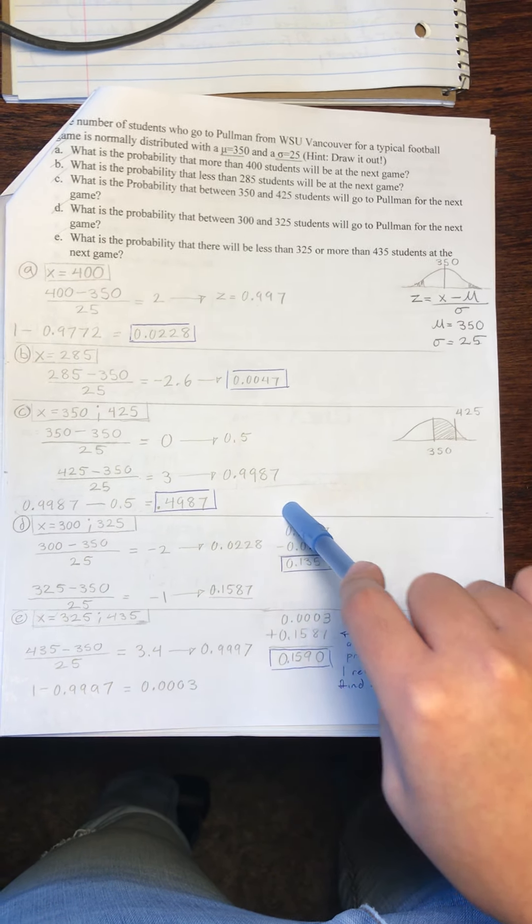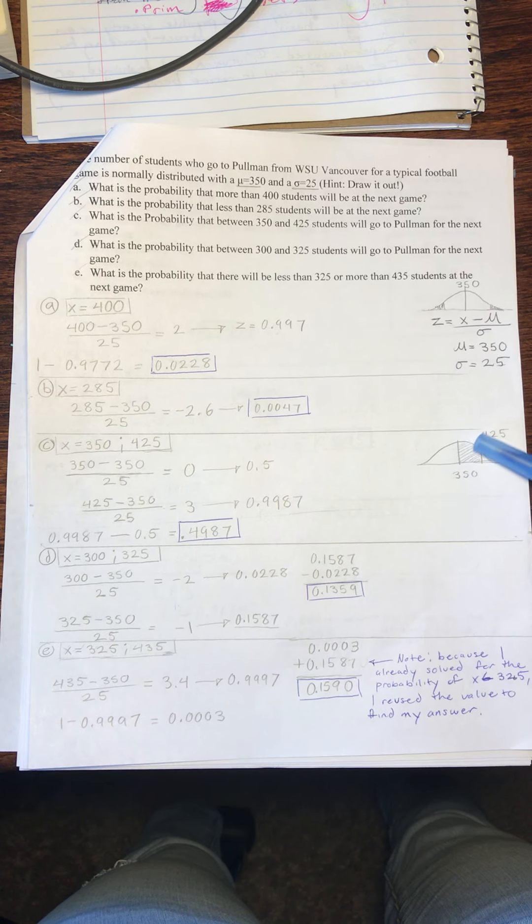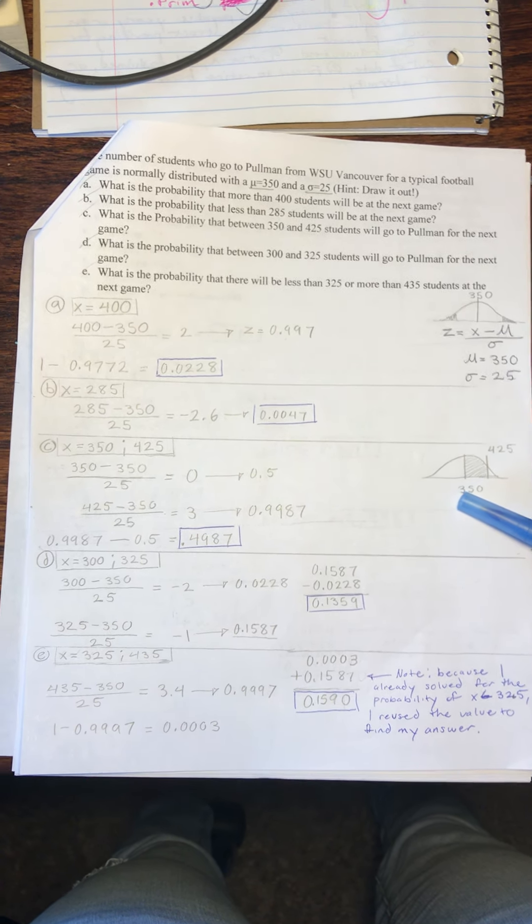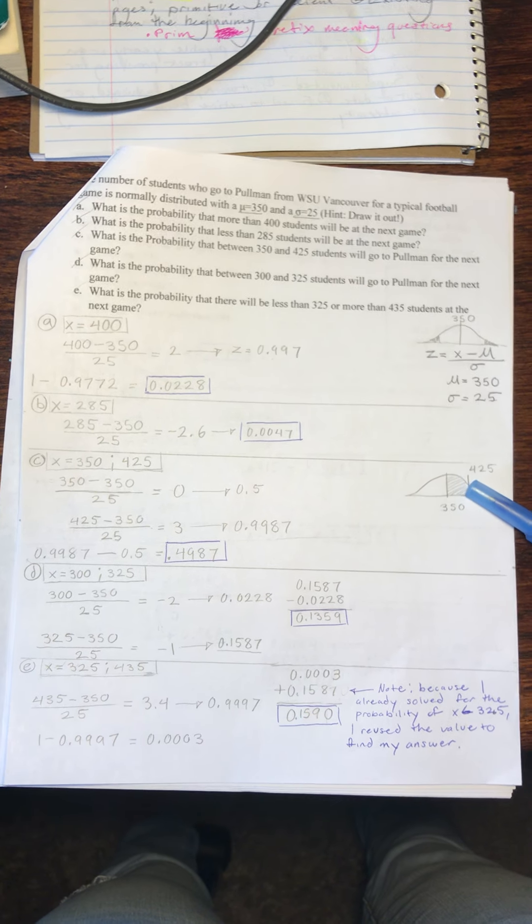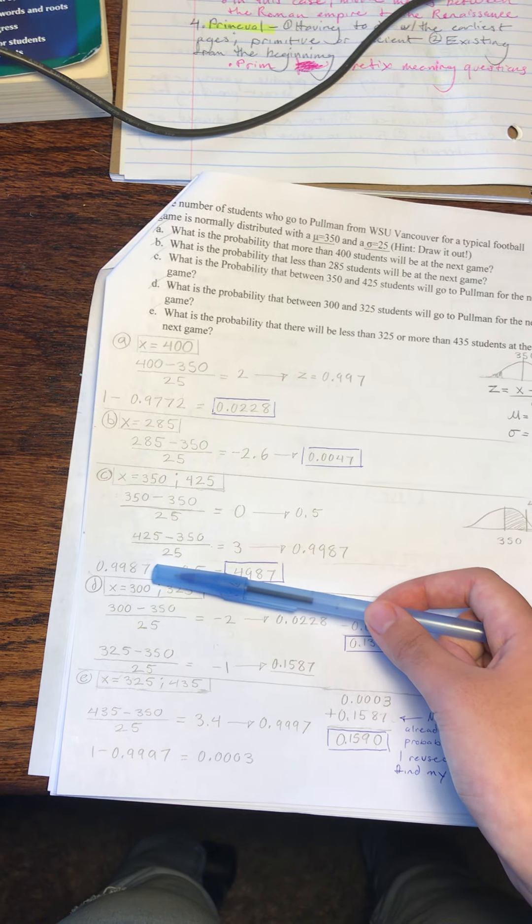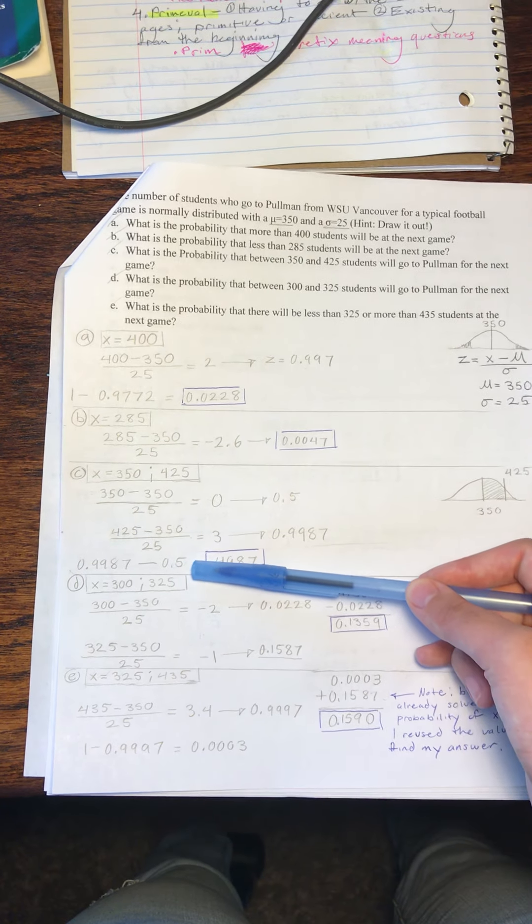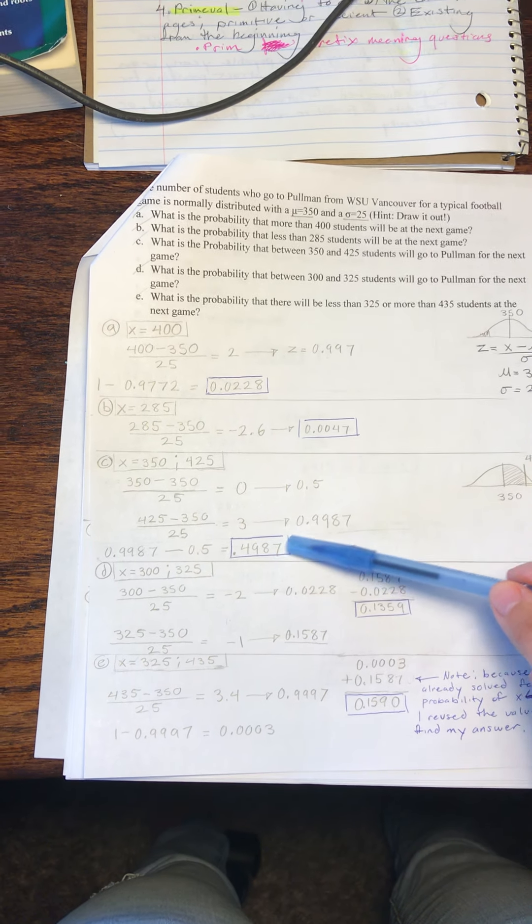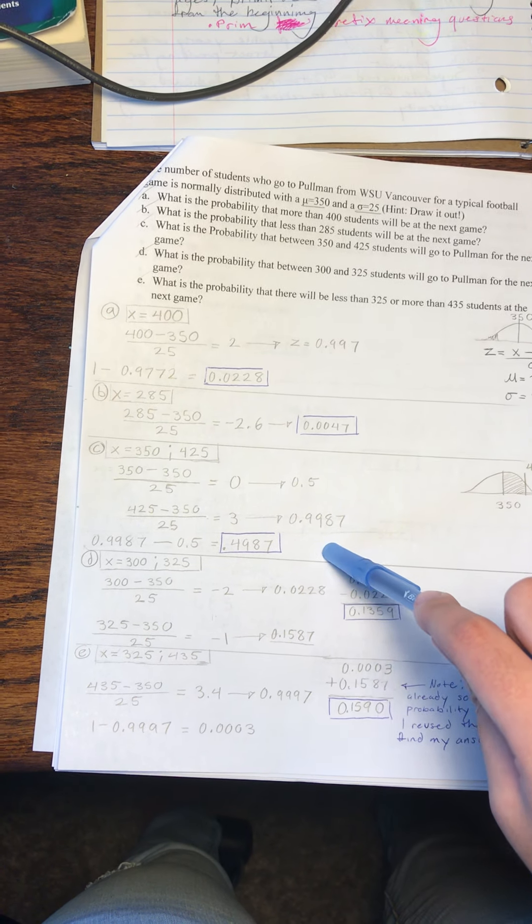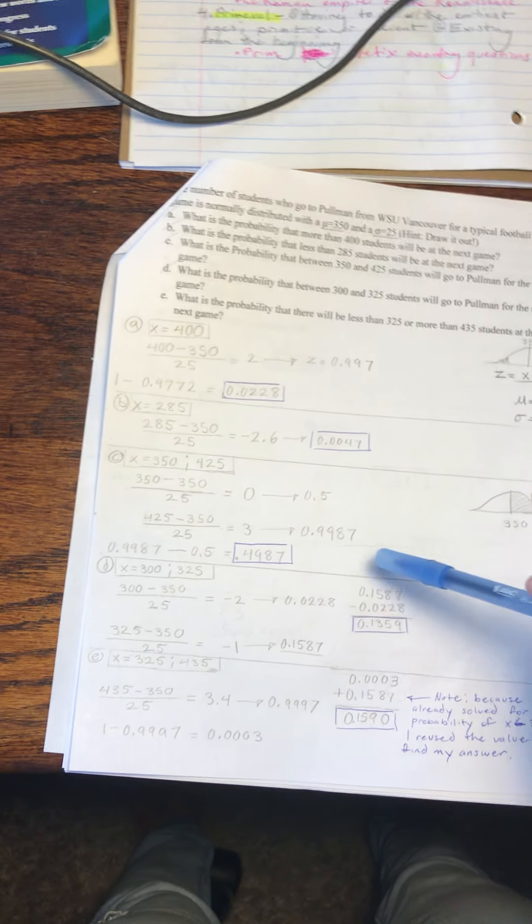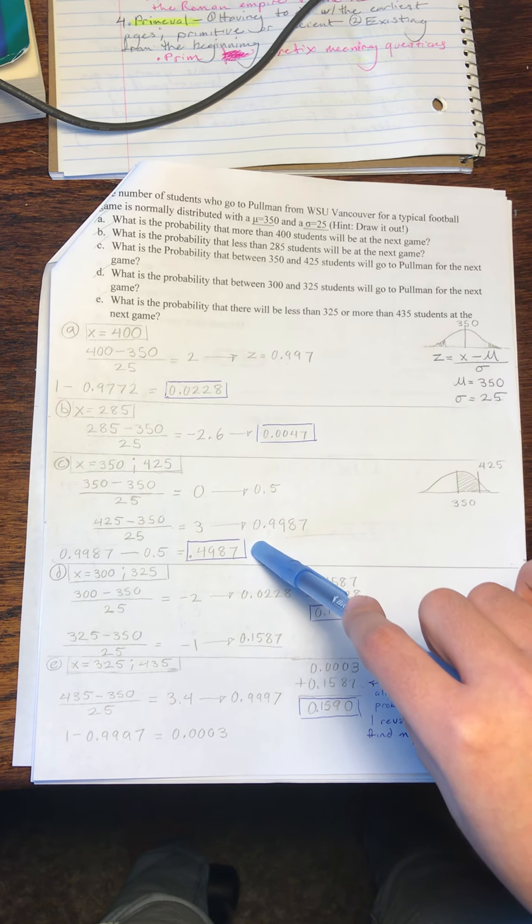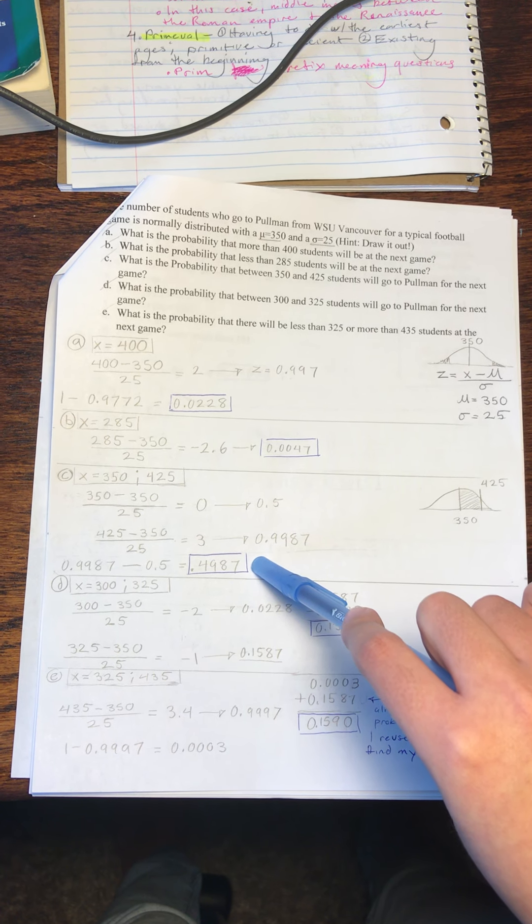But we're not done yet. We are looking for this area within the distribution between 350 and 425. To find that, we will take our answers, we will take the greater value, subtract 0.5, and that will give us a value of 0.4987. That is the probability that between 350 and 425 students will go to the game.